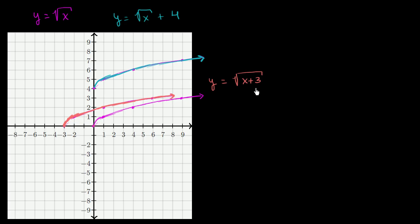Now let's say I wanted to flip this graph over — take its mirror image around the line x equals negative 3, so it goes the other direction. Now the domain is different: it should be undefined for x greater than negative 3, and defined for x less than or equal to negative 3. We need to flip the sign of whatever we have under the radical.